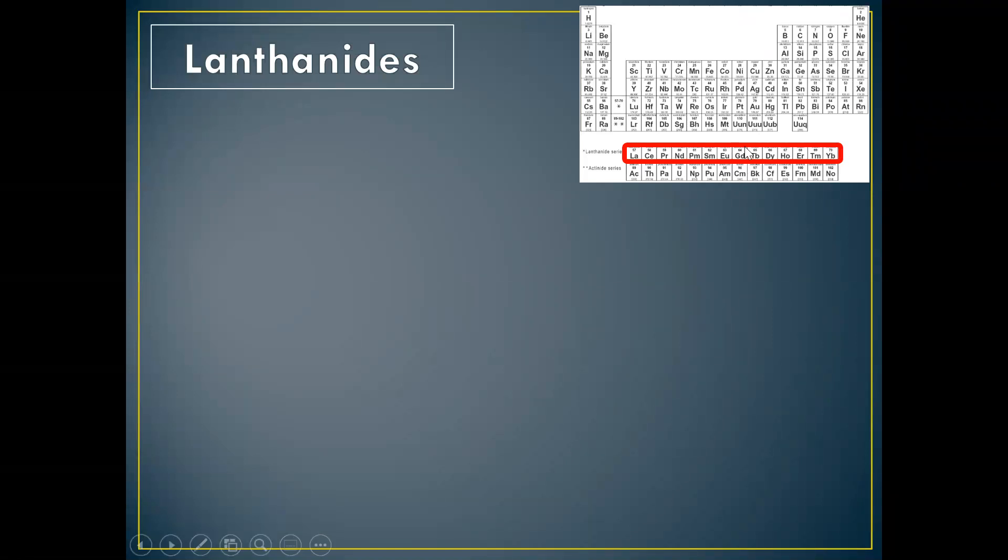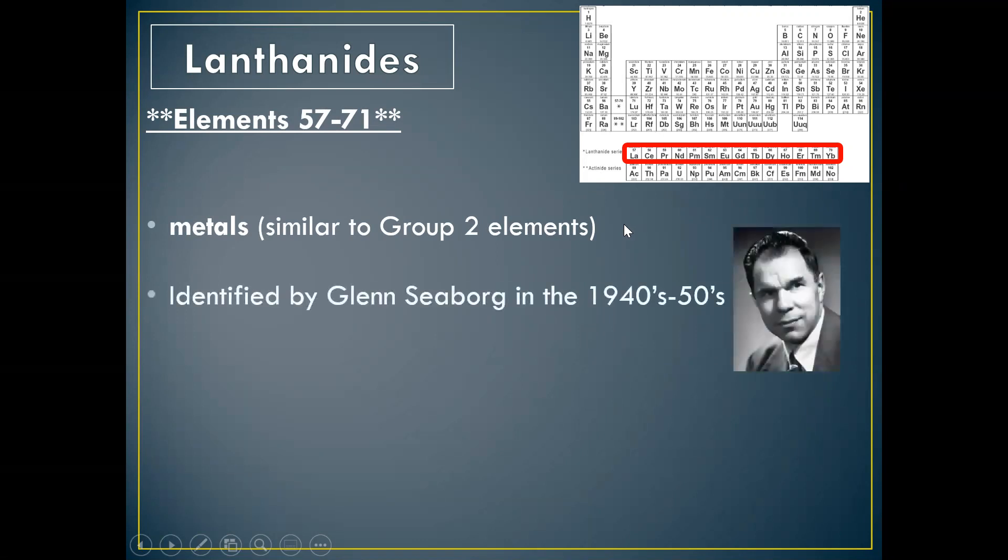So we start to talk about these two rows down here and hydrogen. So this row on the periodic table is a family called the lanthanides. These do not have a group number. They're elements 57 through 71. These are metals and they're similar to the group 2 elements or the group 2 metals, so they're less reactive and harder than group 1. These elements were identified by Glenn Seaborg and his crew, his researchers, between the 1940s and 1950s.